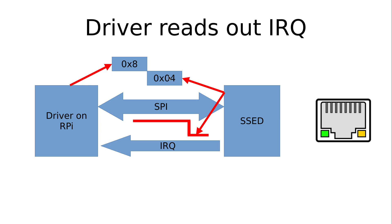In case bit number 4 is set, a frame was transmitted successfully. But if bit number 2 is set, the driver knows the SET device has received a frame. After this command, the SET device will de-assert the interrupt pin again, so the interrupt is no longer present on the Raspberry Pi.